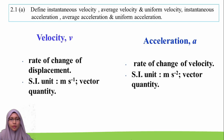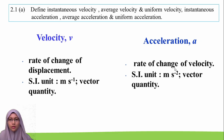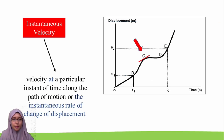For the next learning outcome, we are going to define instantaneous velocity, average velocity, uniform velocity, instantaneous acceleration, average acceleration, and uniform acceleration. Velocity is the rate of change of displacement and it is a vector quantity. Acceleration is the rate of change of velocity, with SI unit metres per second squared, and it is also a vector quantity. Instantaneous velocity means the velocity at a particular instant of time along the path of motion, or the instantaneous rate of change of displacement.